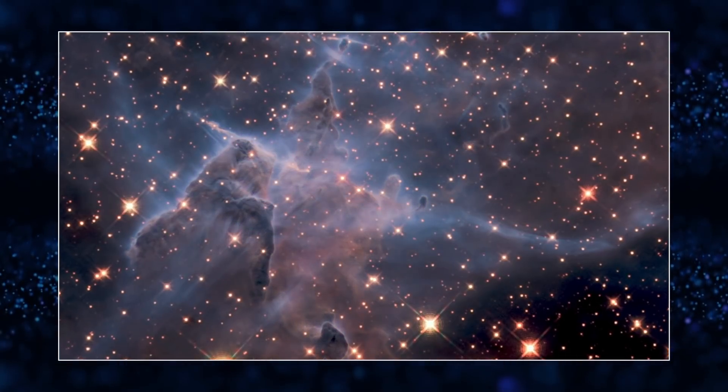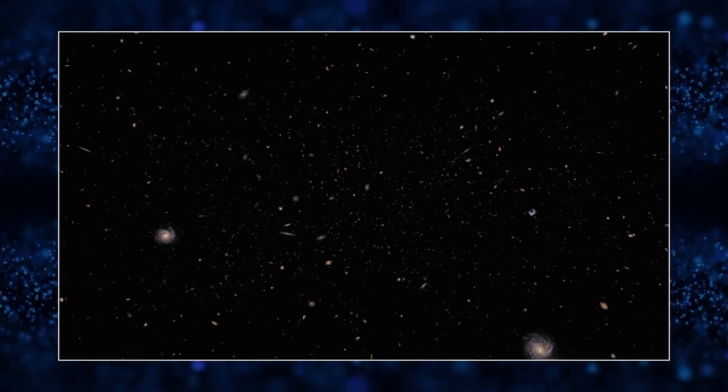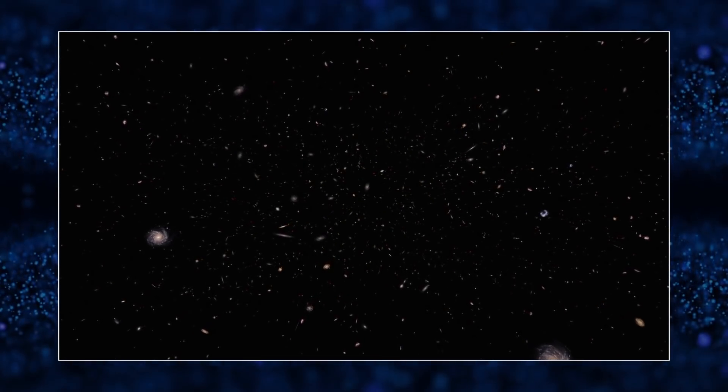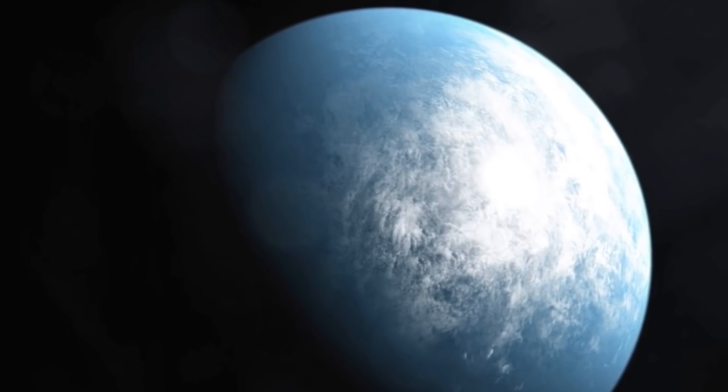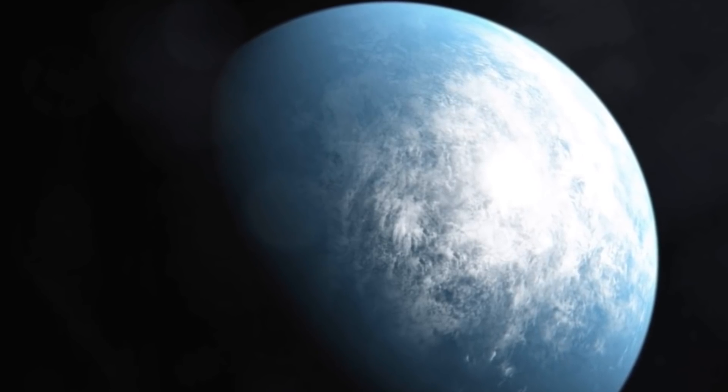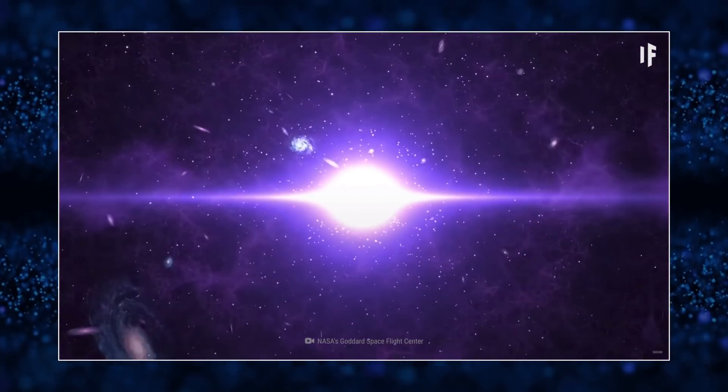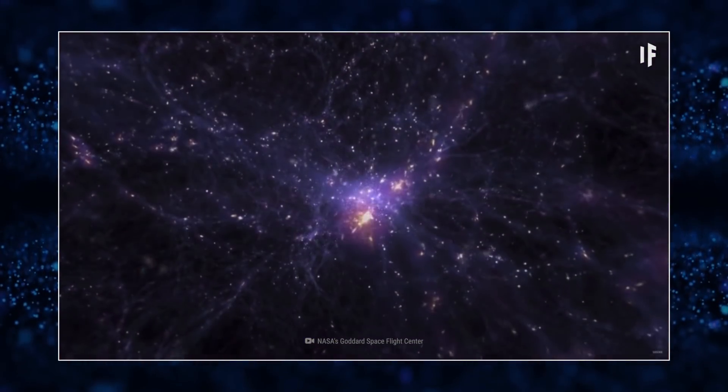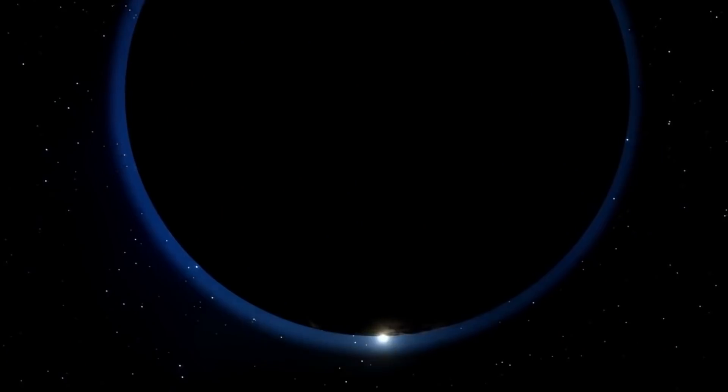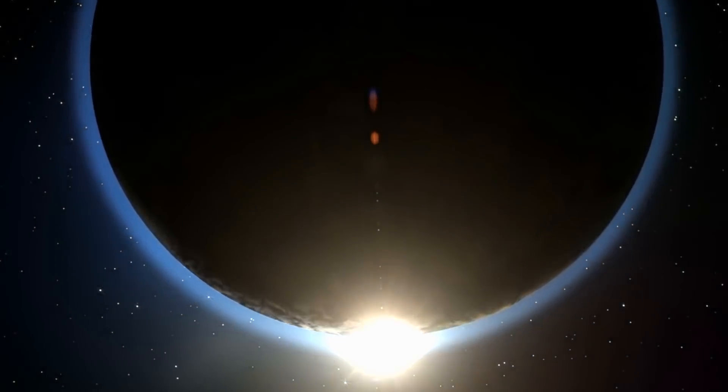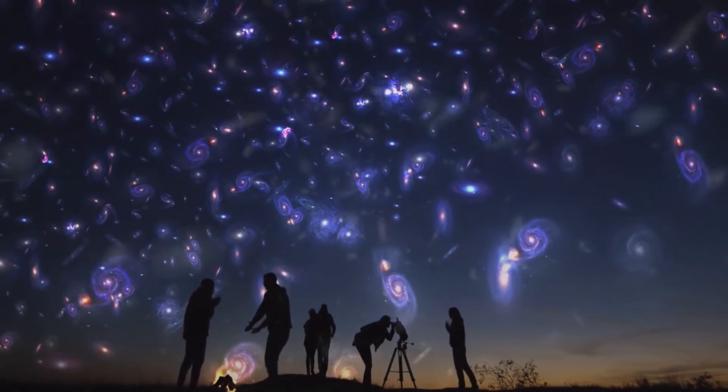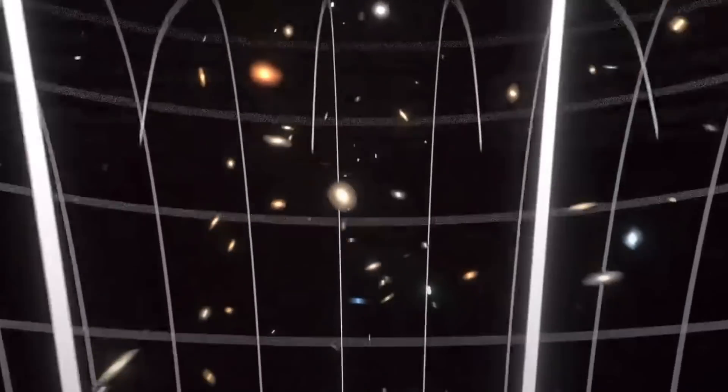In a nutshell, dark matter slows the expansion of the universe while dark energy accelerates it. Dark energy is by far the more powerful of the two, accounting for roughly 68% of the total mass and energy of the universe. Dark matter accounts for 27%, and the rest, a measly 5%, is all the ordinary matter we see and interact with on a daily basis.